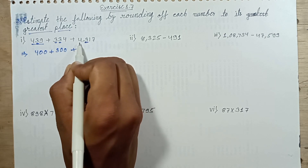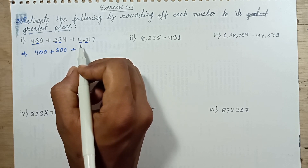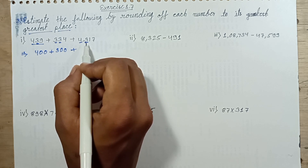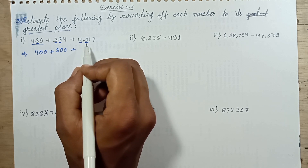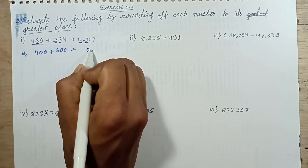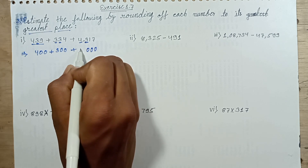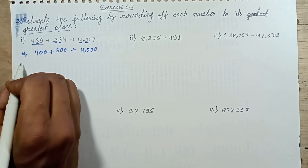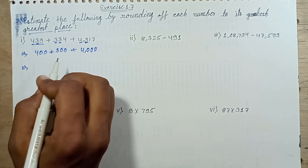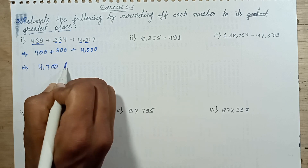Hundreds place digit is 3 and thousands place digit is 4. The greatest place is 4, in this factor. Three is the hundreds place digit — 3 is less than 5. Rounding this number: 3 replaced with 0, 1 replaced with 0, 7 replaced with 0, and 4 stays. Adding these numbers: 400 plus 300 plus 4,000. Comes to 4,700. This is my answer.